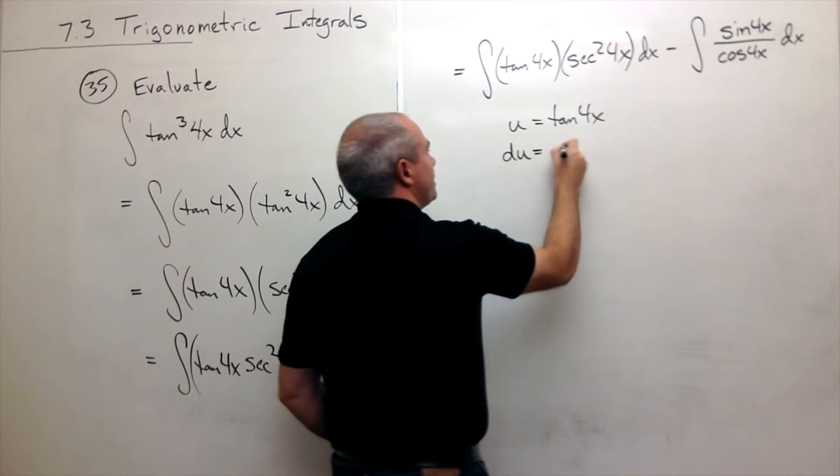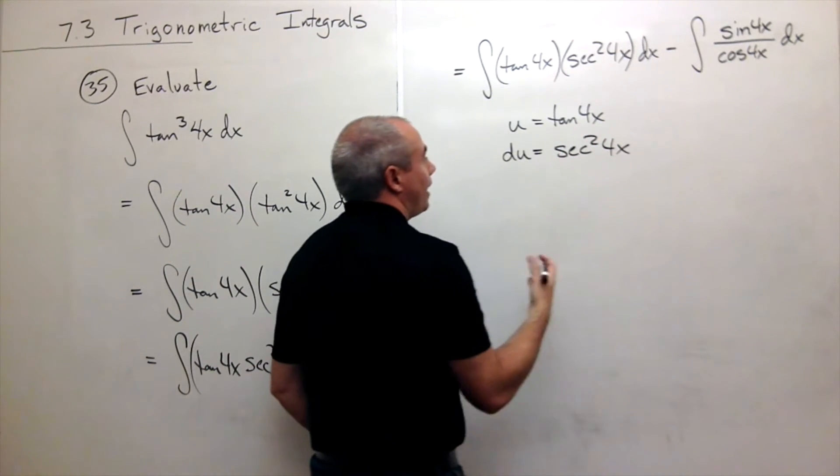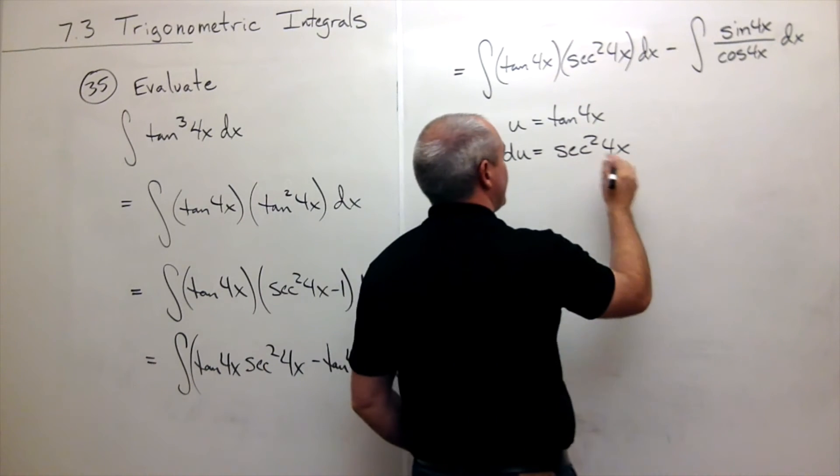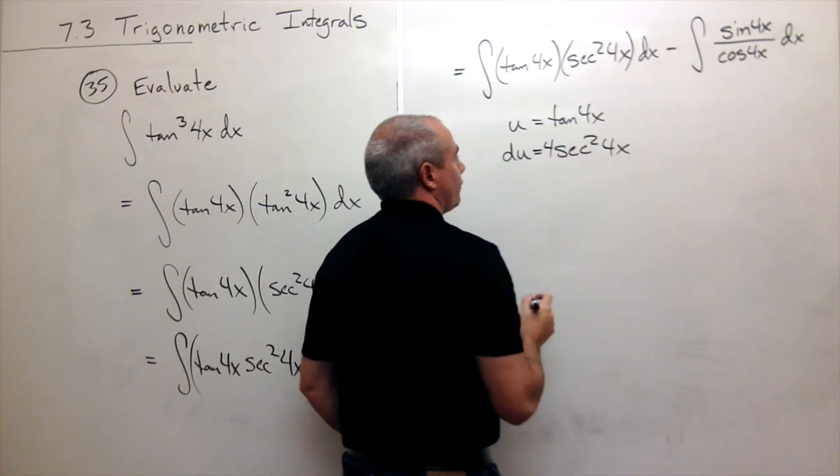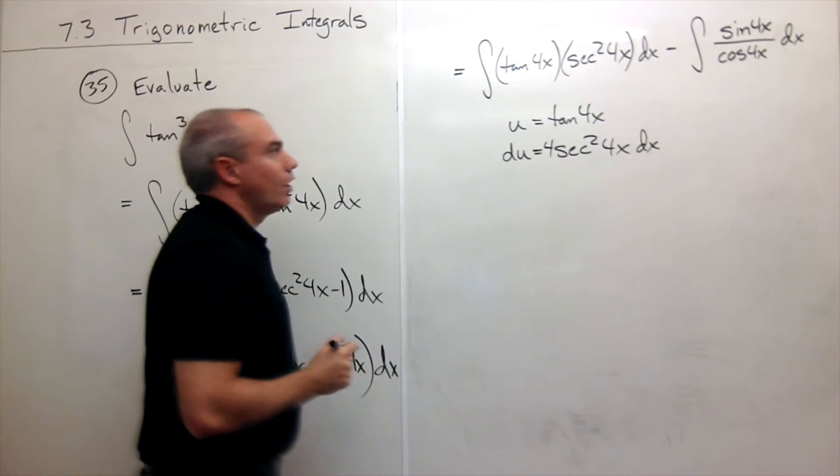If that's the case, then du would be secant squared of 4x times an additional 4 by the chain rule. So I'll write that out in front, dx.